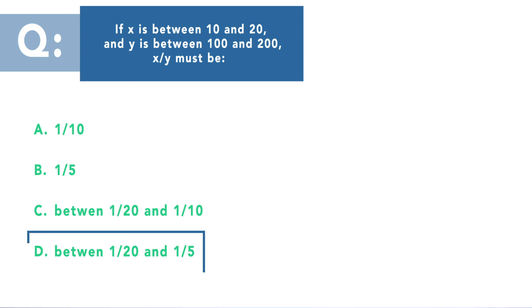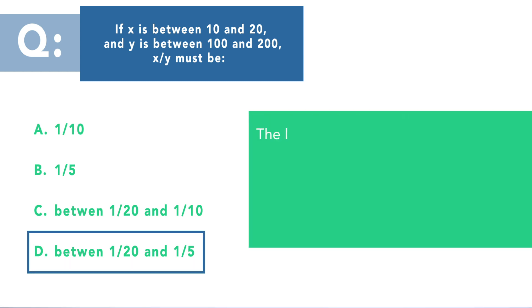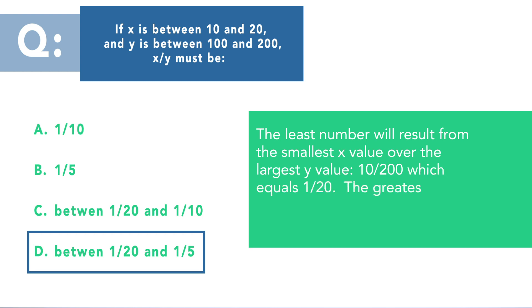Now the correct answer is between 1/20 and 1/5. Now the least number will result from the smallest X value over the largest Y value. So this would be 10 over 200, which equals 1/20. The greatest number will result from the largest X value over the smallest Y value, which would be 20 over 100, which equals 1/5. Let's move on to the third question.